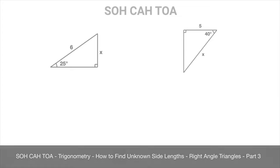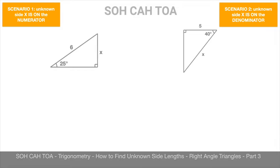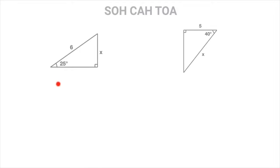In this tutorial, we look at the two scenarios we need to know how to solve when finding unknown side lengths in right-angled triangles. And for that, we're going to work through the two examples that we see here. In each case, we need to find the unknown side length marked X. So let's get started.